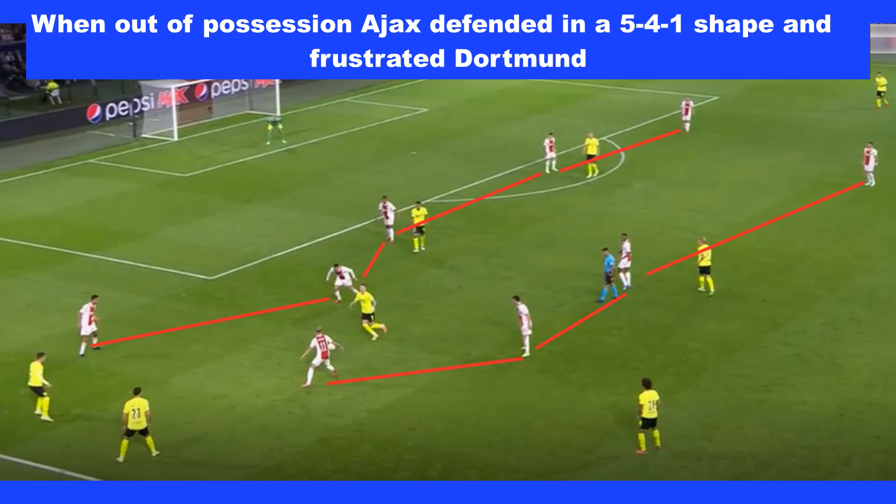On the occasions that Dortmund could beat Ajax's press, Ajax would sit back in a low block forming a 5-4-1, with only Haaland forward. Dortmund found this hard to beat, as they did not get enough players forward.